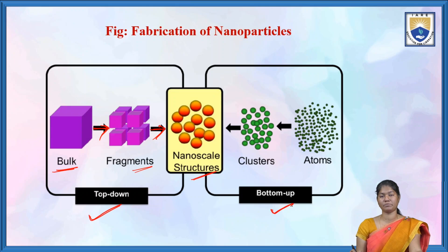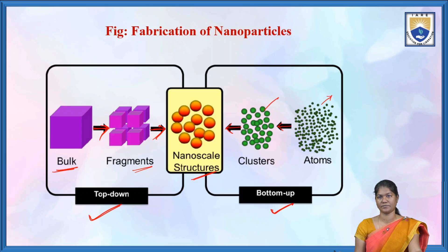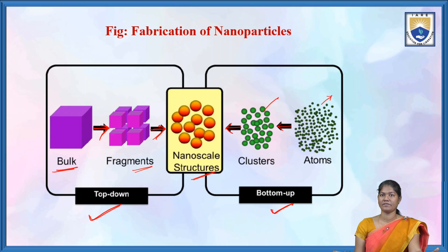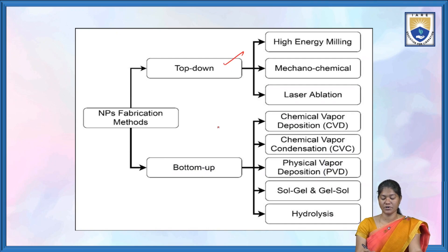Coming to the bottom-up approach, there are atoms. Atoms are added atom by atom to get clusters, and then we will get nanoscale structures. By adding atoms together we get clusters and then we can build nanosized particles. So nanoparticle fabrication methods are top-down and bottom-up.